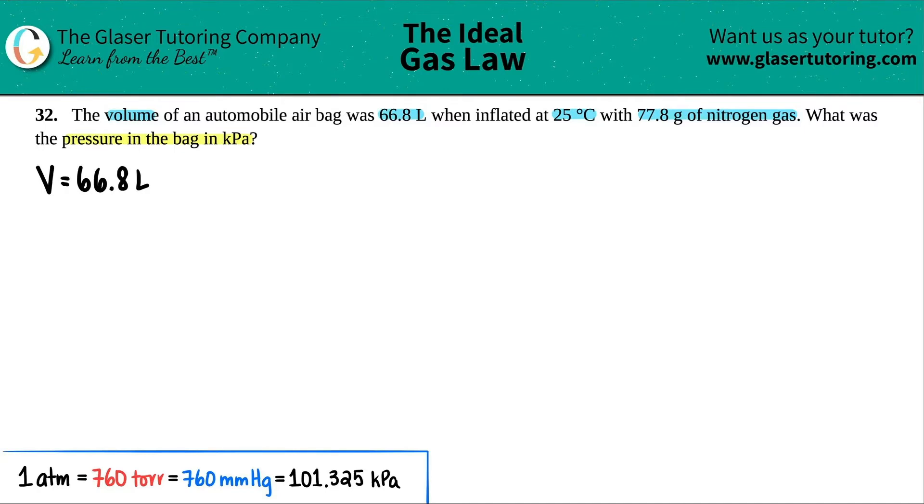And when this was inflated, it was at a certain temperature. So I'm going to say I have a temp value, 25 degrees Celsius. Now they tell us that we have 77.8 grams of nitrogen gas. Maybe I'm not too sure what this would be. Maybe it's a mass. So we'll just say mass M equals.